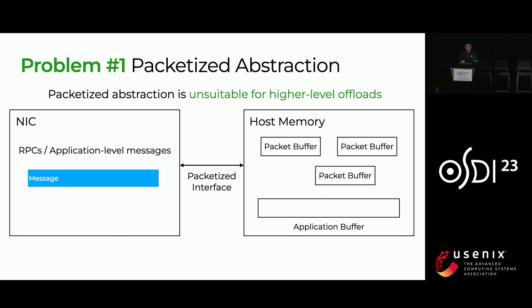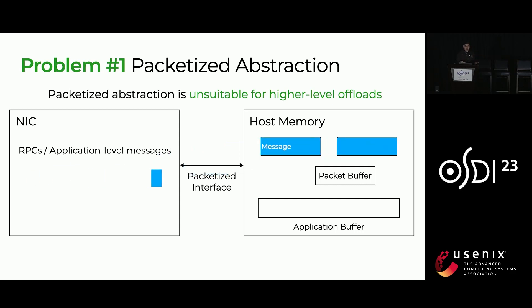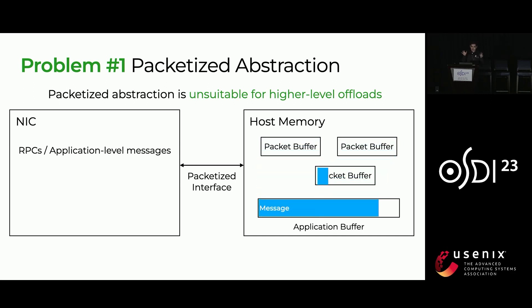The first problem with this interface is the packetized abstraction itself, and that's because it's unsuitable for high-level offloads. Suppose, for example, that I have a NIC that is aware of RPCs or application-level messages. Even though the message can span multiple packets, the NIC is aware of the message boundary. But even though the NIC is aware of the message boundary, the packetized interface forces the message to be split among these different packet buffers. Our software needs to recombine these pieces before delivering the message to the application.